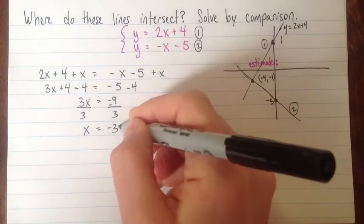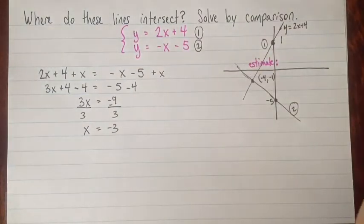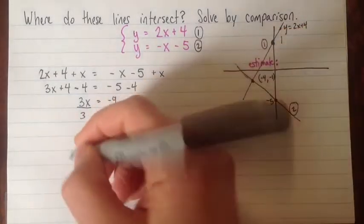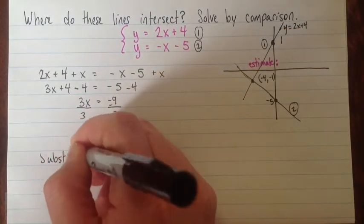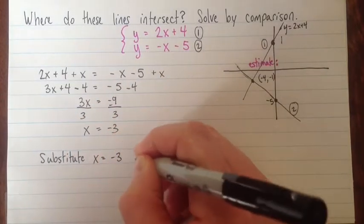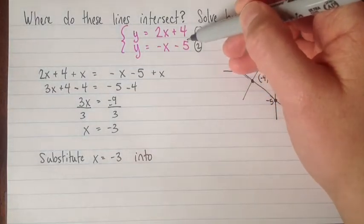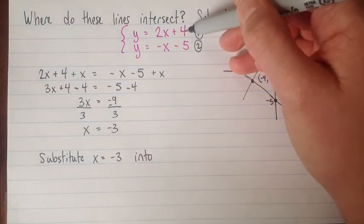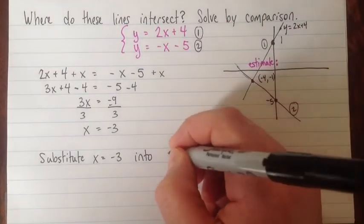And now we've got one of the x values. It feels a little bit like we're done, but we're not actually done because we also have to find the y value at this point. So substitute x equals negative 3 into either equation. It doesn't matter. I'll substitute it into number 1, I guess.